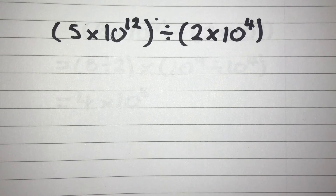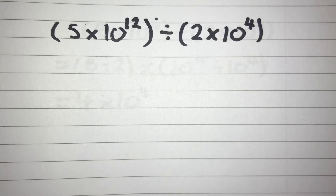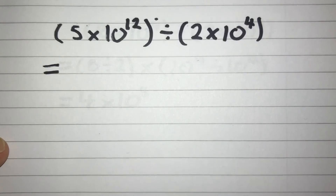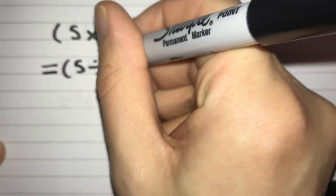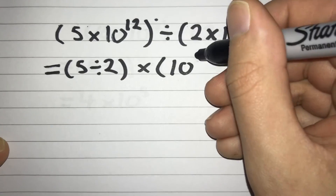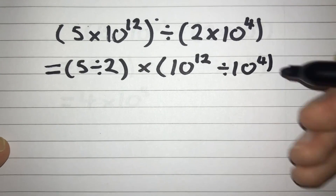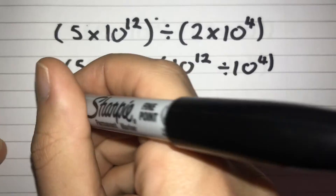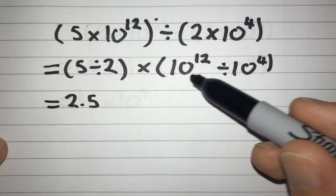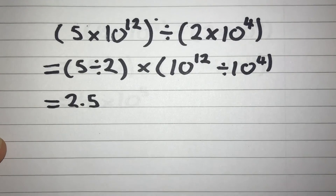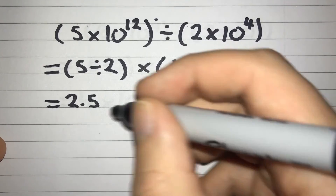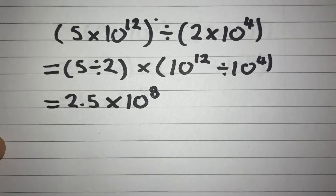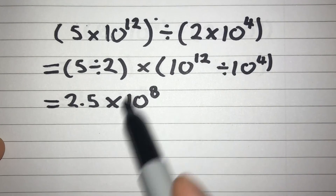Now there are two questions for you to have a go at. Pause the video and try this first one: 5 times 10 to the power of 12 divided by 2 times 10 to the power of 4. Working it out — let's rearrange: 5 divided by 2 multiplied by 10 to the power of 12 divided by 10 to the power of 4. 5 divided by 2 gives us 2.5, and 12 take away 4 gives us 8, so we get 2.5 times 10 to the power of 8. We're still in standard form — number between 1 and 10 and a power of 10.